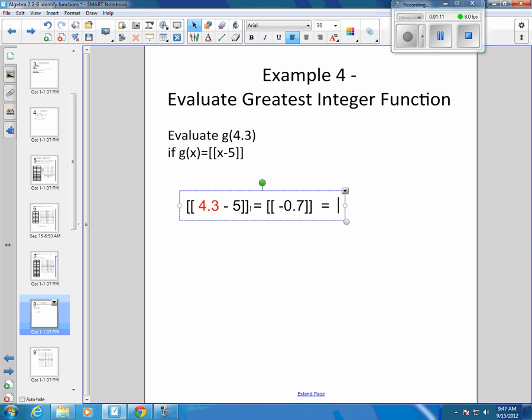So we want the greatest integer that is less than or equal to a negative 0.7. And that would be a negative 1. That would be the smallest integer left.